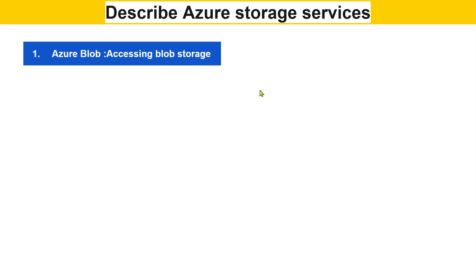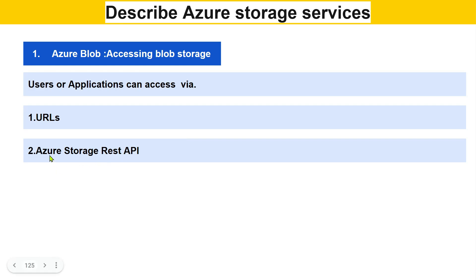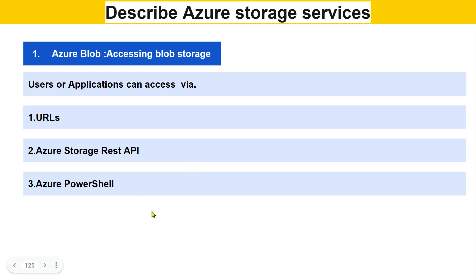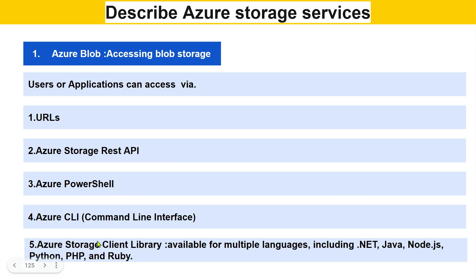Users and applications can access blob storage via multiple methods: URLs (direct links), Azure Storage REST APIs, PowerShell, Command Line Interface (CLI), and the Azure Storage Client Library. The client library is available for multiple languages including .NET, Java, Node.js, Python, PHP, and Ruby.